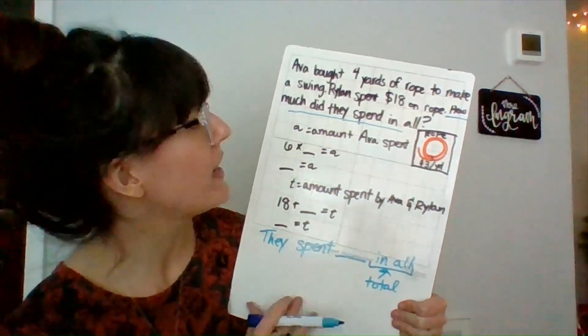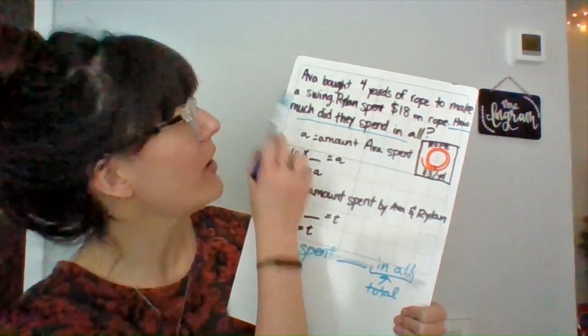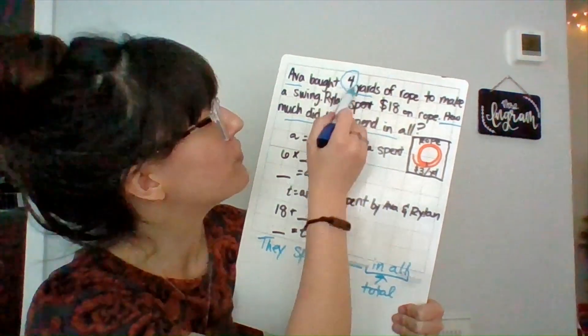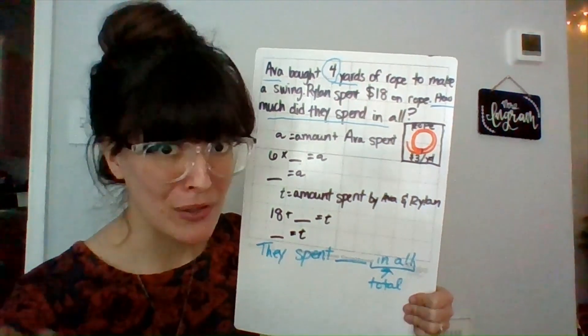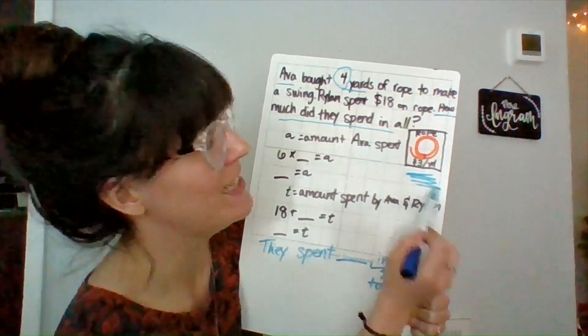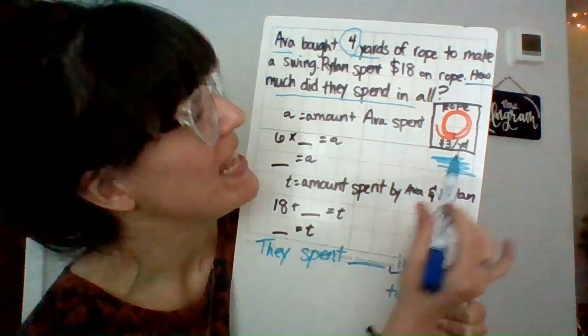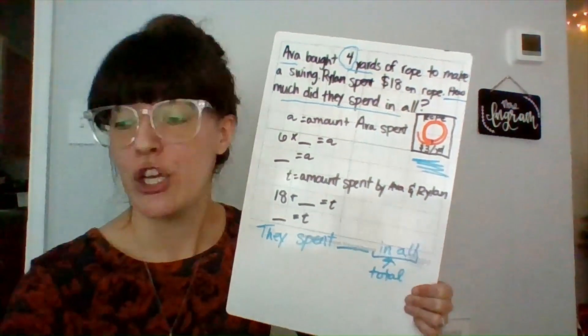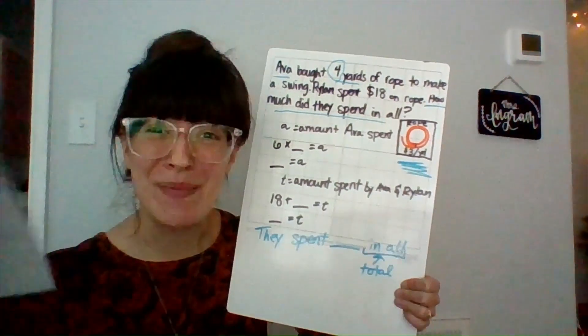All right, now let's go back up here to Ava though, because to figure out how much they spent in all, I need to figure out how much Ava spent. So here it tells me Ava bought four yards of rope. So now I wonder, okay, well, how much is each bundle of rope, each yard of rope? They didn't tell me in the question, but over here, we've got a diagram that gives us a little bit of information that will help us. This says that rope costs $3 per yard. So now I can write a number sentence, step three, to help me solve it.